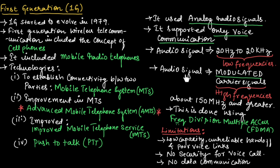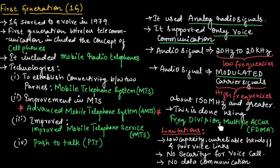Because audio signals are low frequencies, they were modulated using a carrier signal before transmission. This carrier signal is of high frequency — about 150 megahertz and greater. This modulation was done using a technique known as frequency division multiple access, FDMA. In this technique, the frequency spectrum is divided into different bands and these bands are allocated to users for communication at the same time.